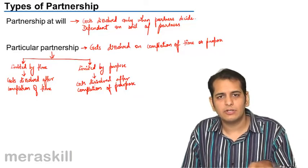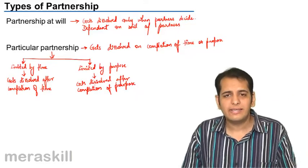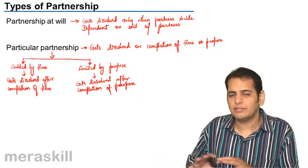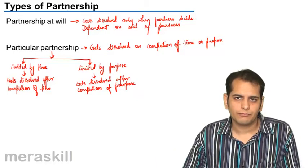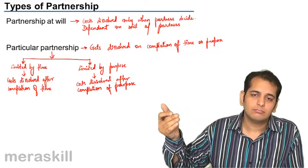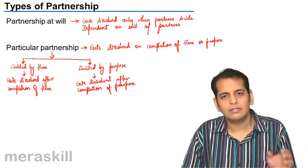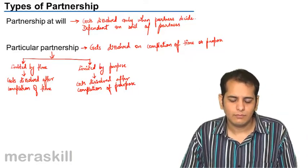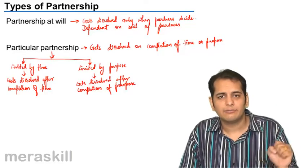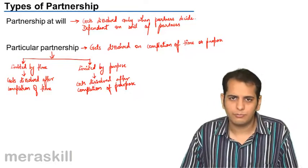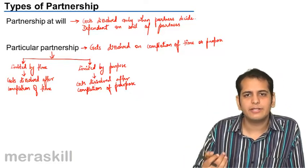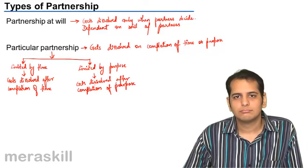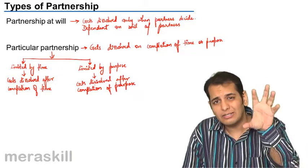When it is for a particular time, it is called limited by time. For example, A and B come together for selling shoes for one year. After the year elapses, after one year, there will be no partnership. However, if they want to continue they can still continue, but essentially the partnership will get dissolved after one year. If they want to continue they can renew it. Another example: X and Y form a partnership for construction of a bridge or a road — they get the tender, they win it, they construct the road, and once the road is complete, the partnership gets over. So it is for a limited purpose.